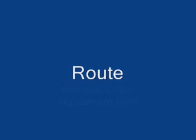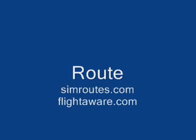The next letter is R, which stands for Route. I think Route is the most crucial part. Basically, you just need to clear them. What I do is go by their first exit point, then for the rest of the route, I look at VAT, SIMROUTES, or FlightAware and look at the normal routes that are usually flown in the real world — that's how you determine the route.